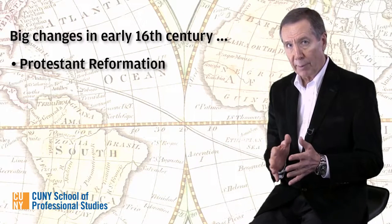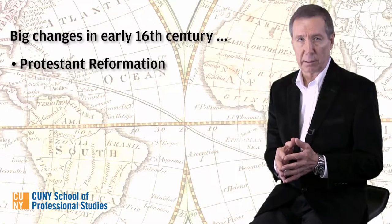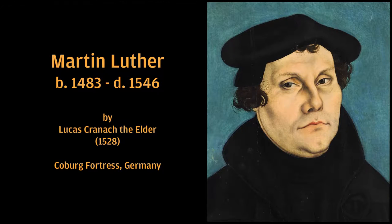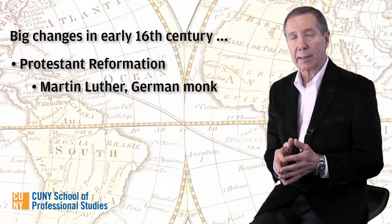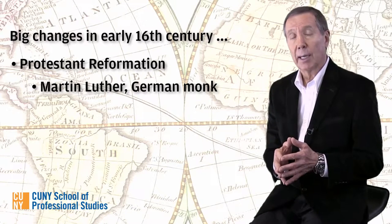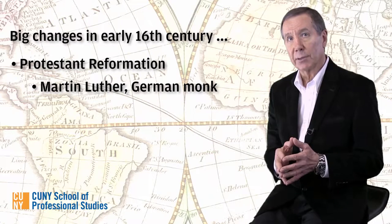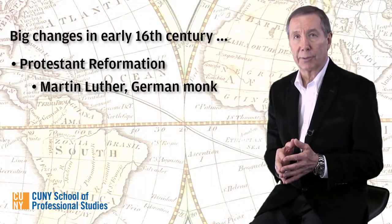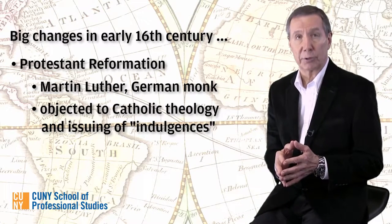The Protestant Reformation began with a German monk, Martin Luther, attacking the Catholic Church. Luther objected to Catholic theology and its practices, in particular the forgiving of sins for a monetary consideration, known as an indulgence.